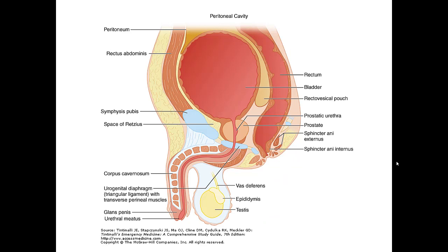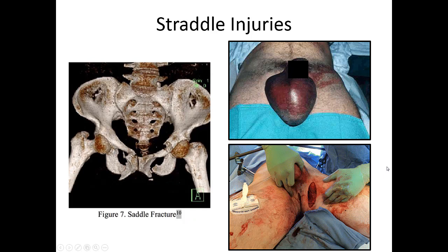Genitourinary trauma is an important consideration with pelvic injuries. The bladder, as a hollow organ, can be prone to rupture. In males, the longer urethra makes them prone to urethral injuries. Motorcycle wrecks in particular cause straddle injuries, with an anterior compression force against the motor and gas tank causing serious pelvic fractures. These can manifest as a scrotal hematoma, blood at the urethral meatus, or even an open fracture where a bone fragment cuts through the skin. These fragments can lacerate major arteries, making these injuries incredibly dangerous with significant mortality.